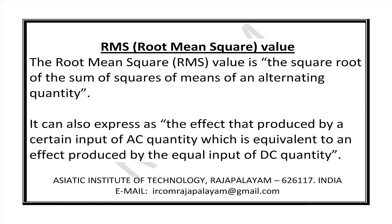The root mean square value, shortly called the RMS value, is the square root of the sum of squares of means of an alternating quantity. It can also be expressed as the effect produced by a certain input of AC quantity which is equal to the effect produced by the equal input of DC quantity.